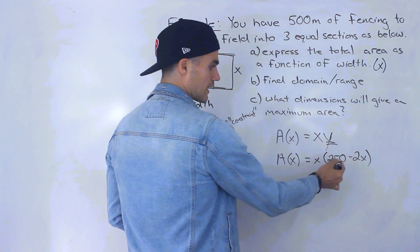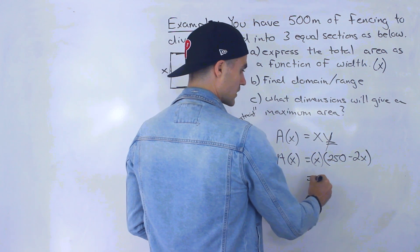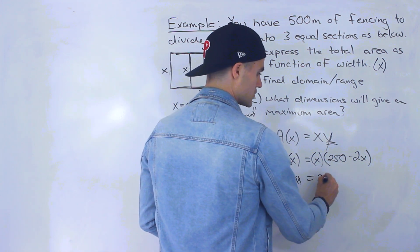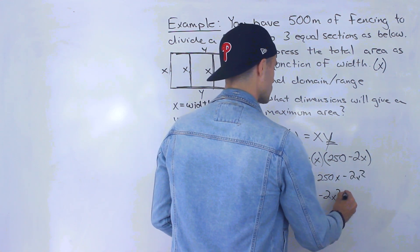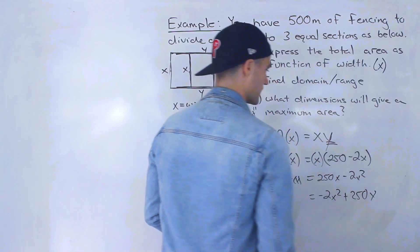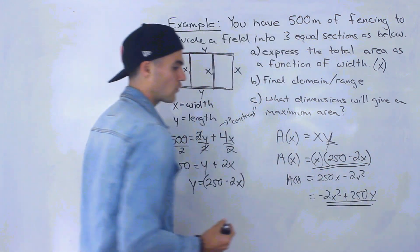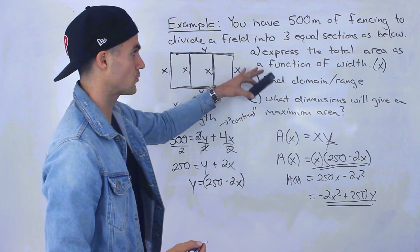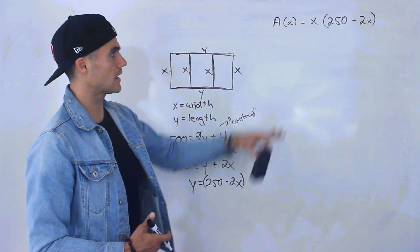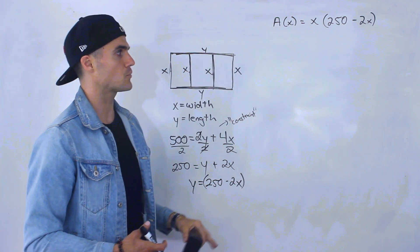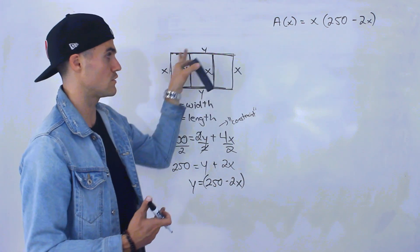Notice that A(x) = x(250 − 2x) is a quadratic in factored form with two factors. If you expand it, you get 250x minus 2x squared, or in standard form: negative 2x squared plus 250x. That is the total area as a function of width. I'll keep it in factored form. Now we need to find the domain and range, and also the dimensions that maximize the area.